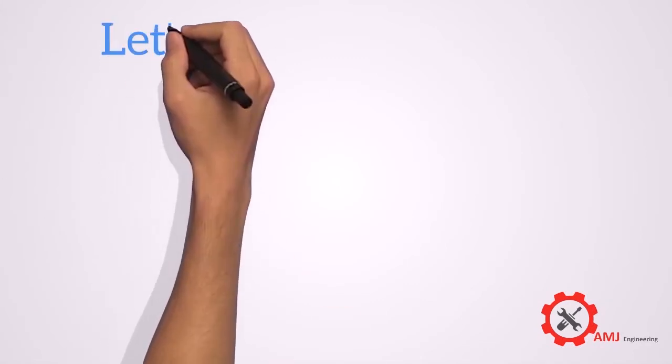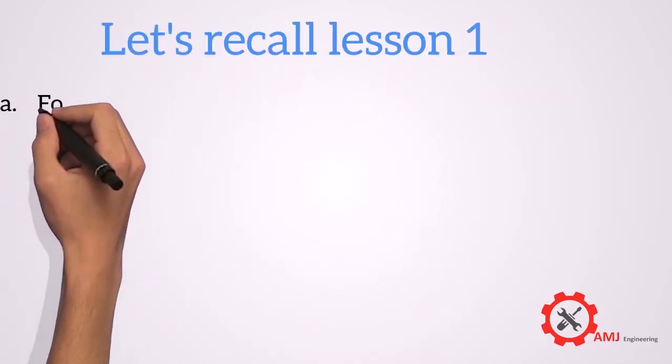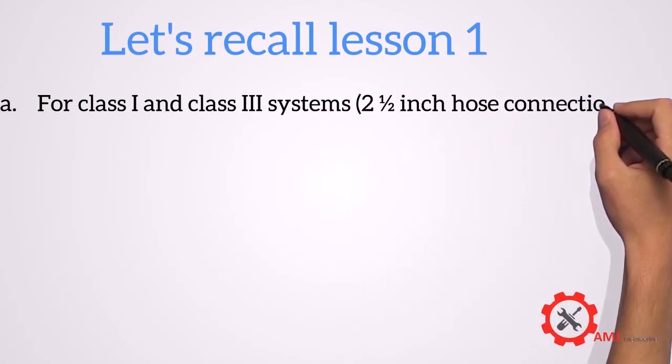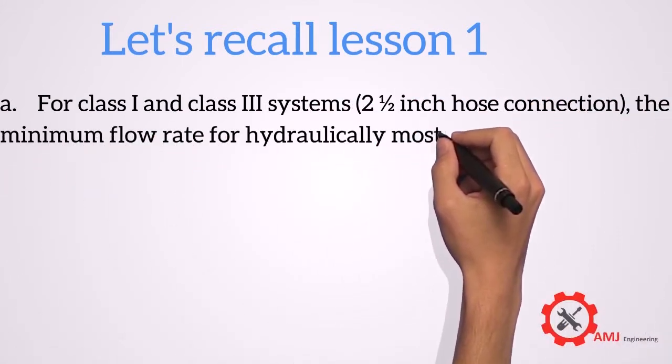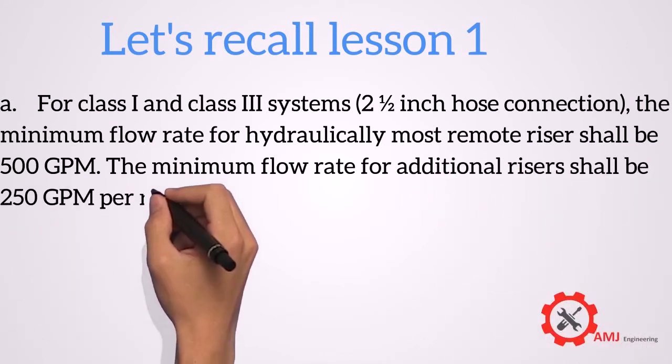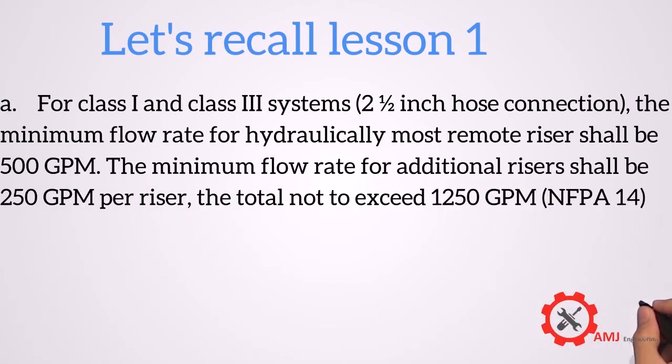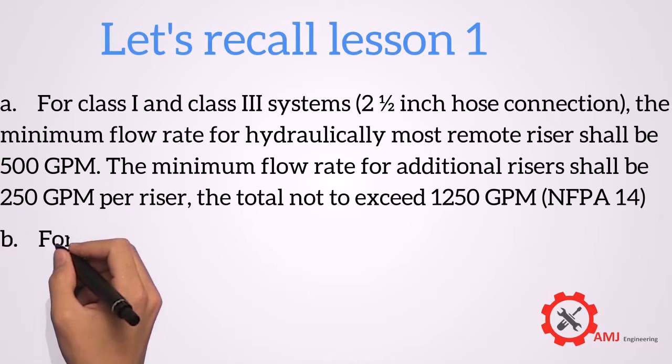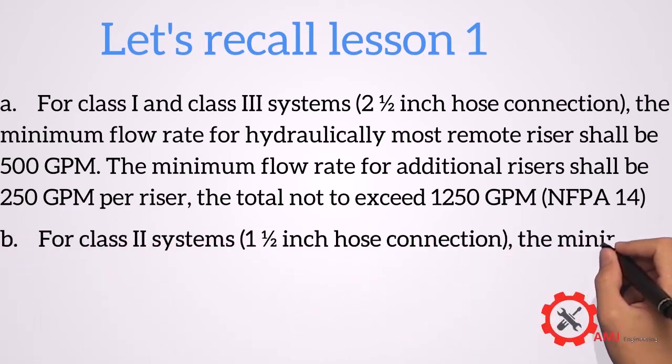Before we start, let's recall two important theories we learned in lesson 1. First, for class 1 and class 3 systems, the required flow for hydraulically most remote riser is 500 GPM. And all other risers shall be 250 GPM per riser, with total flow not to exceed 1250 GPM.